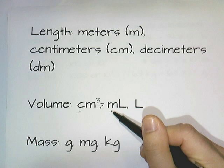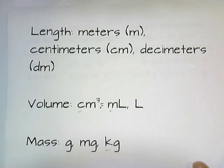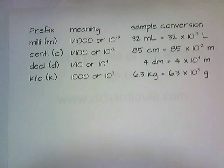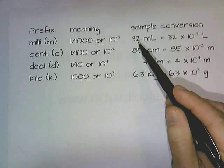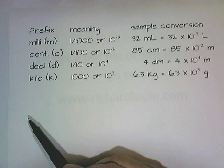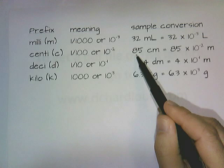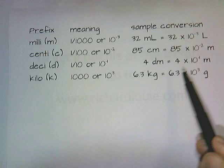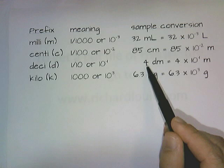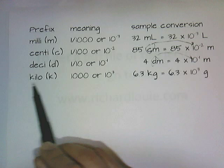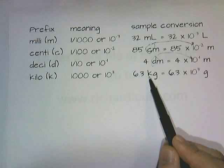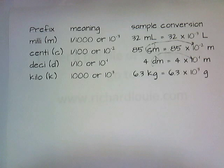You should get these metric prefixes memorized. Here's a table of the commonly used ones: milli means one one-thousandth or ten to the negative third — to convert milliliters to liters, slap on times ten to the negative third. Centi means one one-hundredth or ten to the negative two — to convert 85 centimeters to meters, slap on times ten to the negative two. Deci means one-tenth — to convert four decimeters, slap on times ten to the negative one. Kilo means one thousand — so 6.3 kilograms means 6.3 times ten to the third grams.